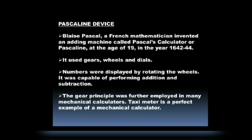Pascaline device. Blaise Pascal, a French mathematician, invented an adding machine called Pascal's Calculator or Pascaline at the age of 19, in the year 1642–44. It used gears, wheels, and dials. Numbers were displayed by rotating the wheels. It was capable of performing addition and subtraction. The gear principle was further employed in many mechanical calculators; the taxi meter is a perfect example of a mechanical calculator.